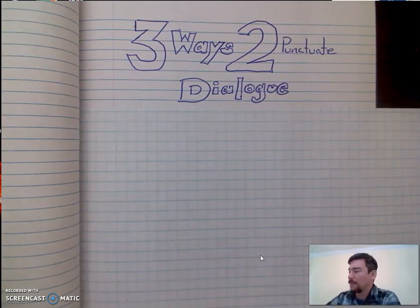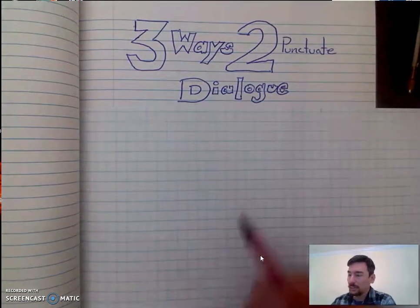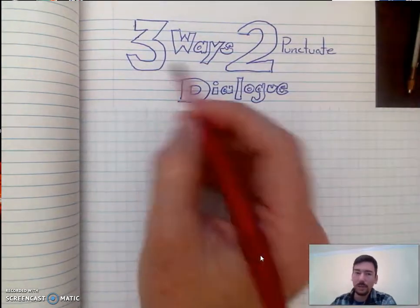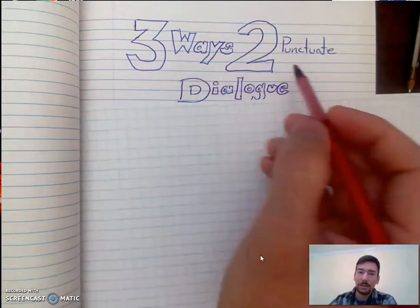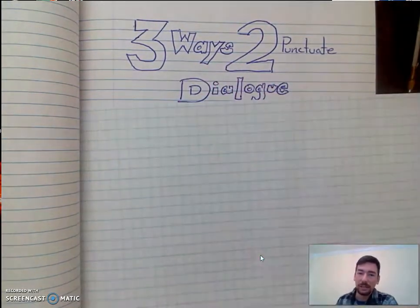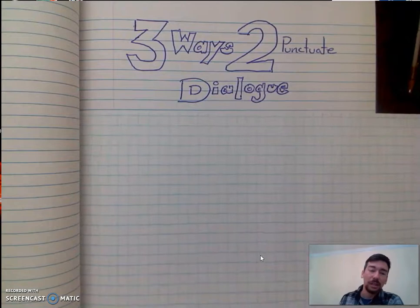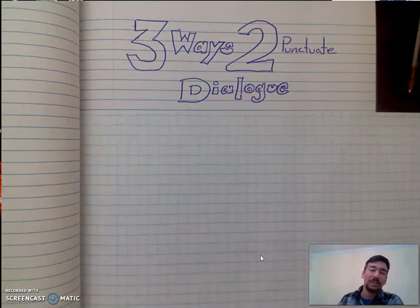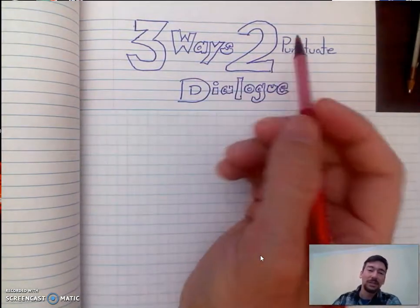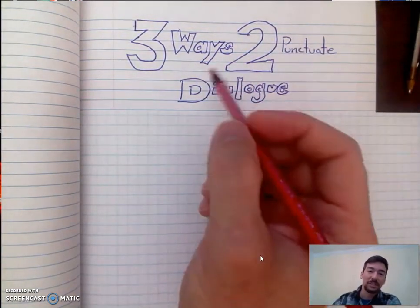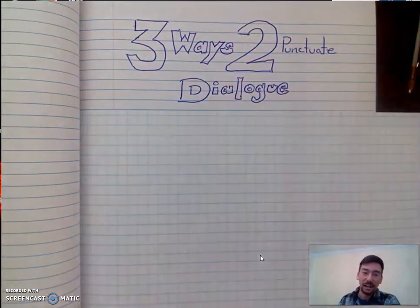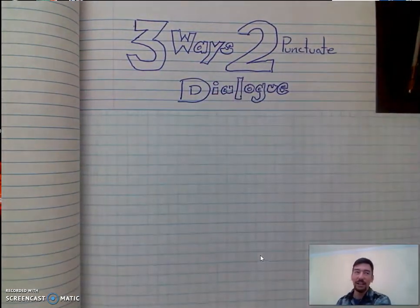So I have my handy-dandy little chart here. It says three ways to punctuate dialogue. And because I'm cool, I use the numbers instead of the words. Do you see that? Ha ha ha ha ha!